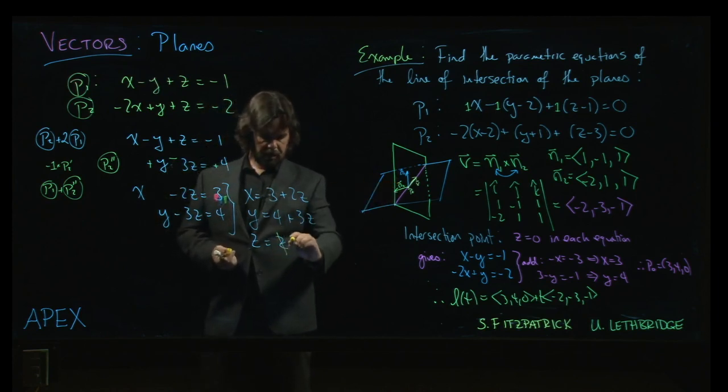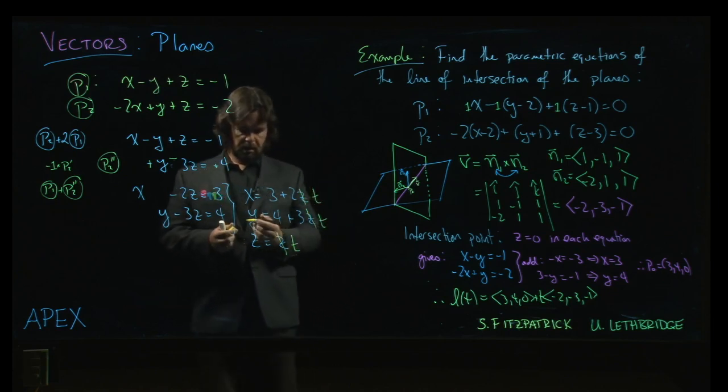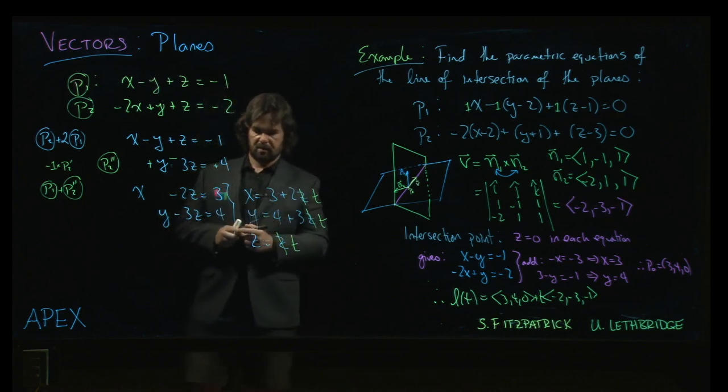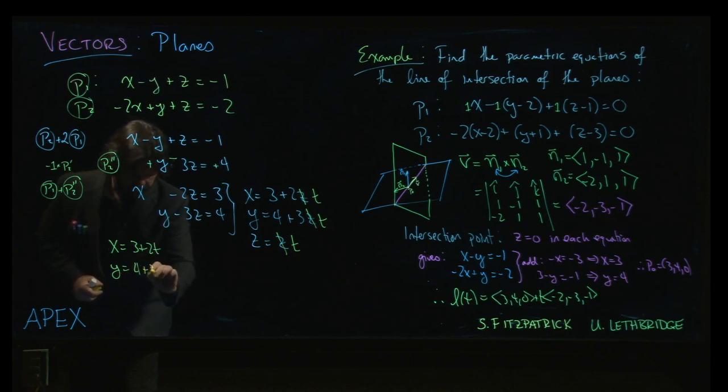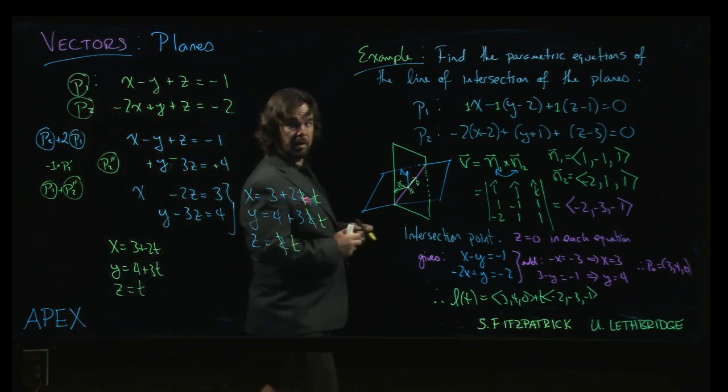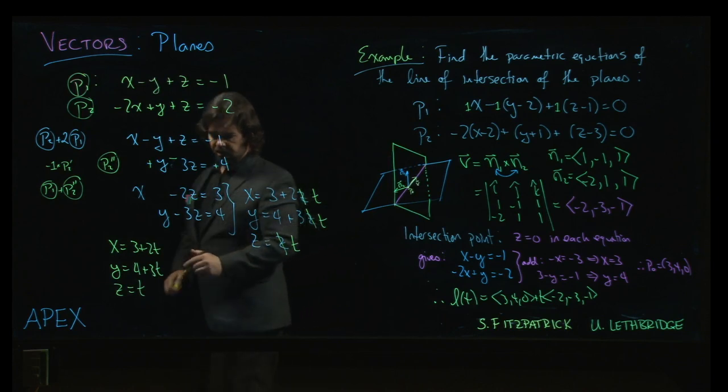Just to make it look like we usually do, let's replace z by t. Well, then that z is a t, and that's a t, and that's a t. And so what we get is x equals 3 plus 2t, y equals 4 plus 3t, and z is equal to t. And those are definitely the parametric equations for a line.